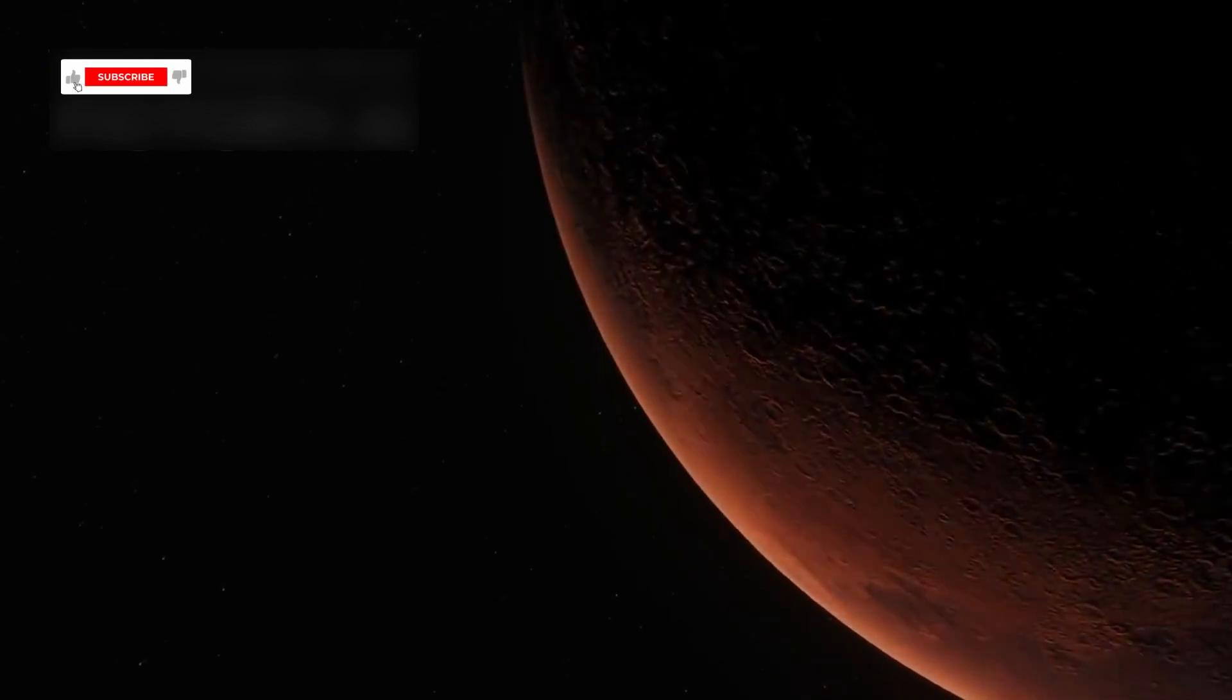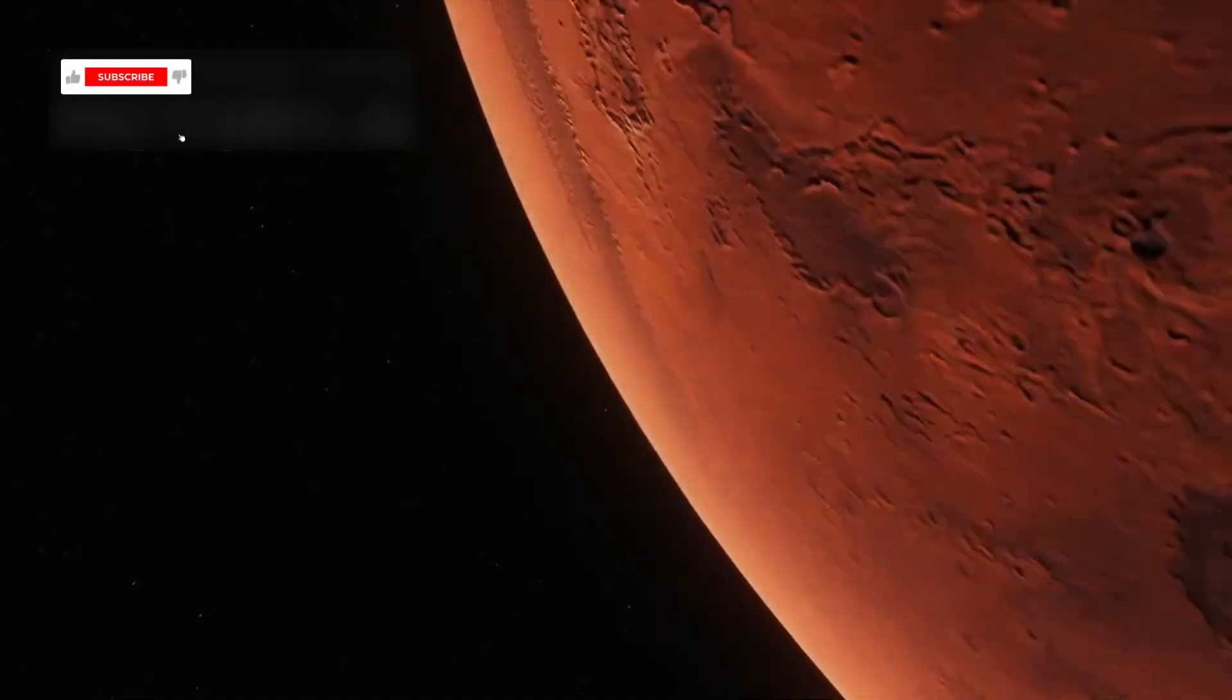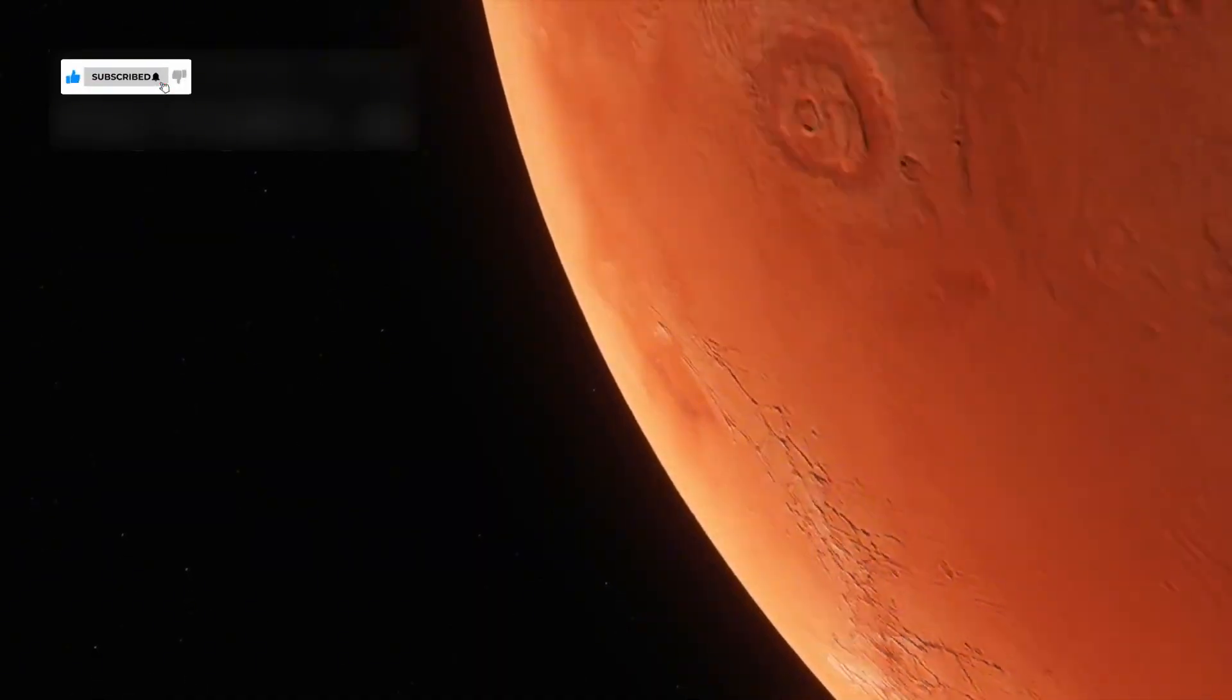Proxima b is an Earth-sized exoplanet that orbits Proxima Centauri, the closest star to our solar system. It's only 4.24 light-years away, yet what we are learning about it is beyond anything expected.